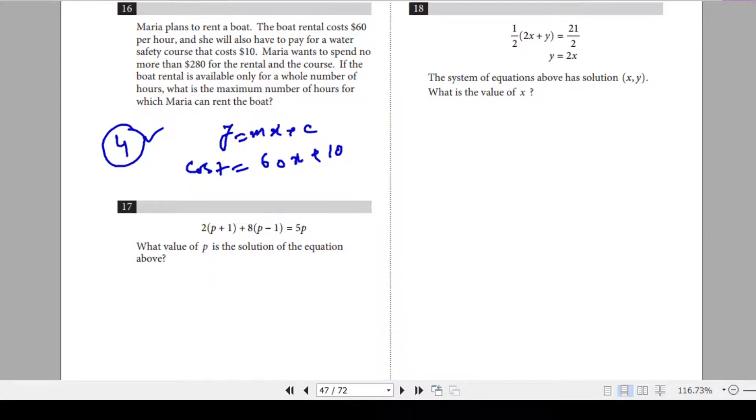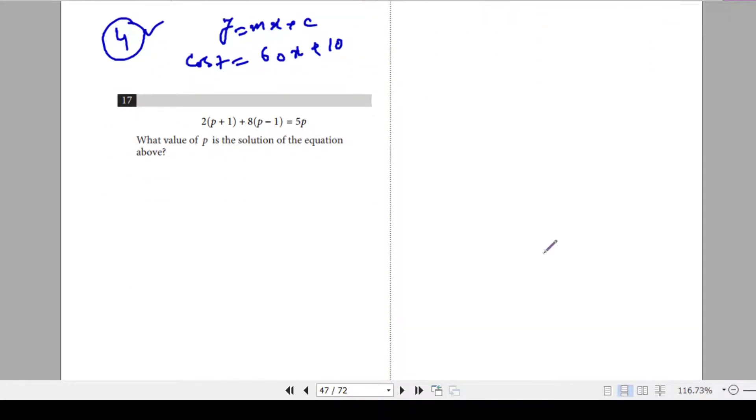Question 17. What value of p is the solution of the equation? Let us read it. 2p plus 2 plus 8p minus 8 is equal to 5p. So 8p plus 2p is 10p and 10p minus 6 is equal to 5p. So you can just arrange it. 5p will be there, 10p minus 5p and 6 will be there. So 5p is equal to 6 and p is equal to 6 over 5, or 1.2.